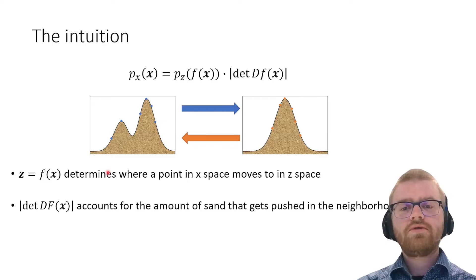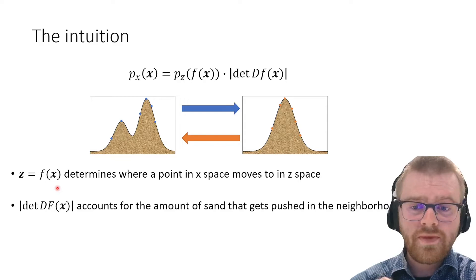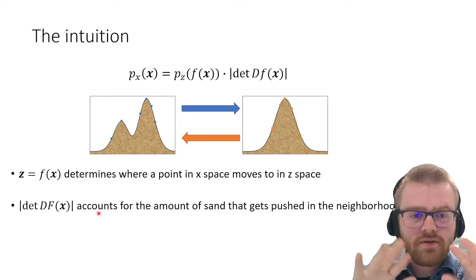The intuition is: in the normalizing flow, the flow function determines where a point in x space maps to a point in z space and vice versa. The log determinant accounts for the amount of sand we're moving around.